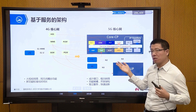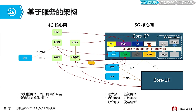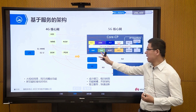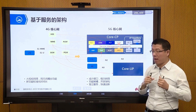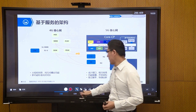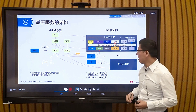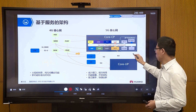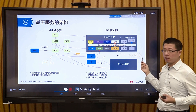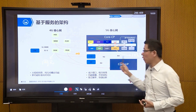Many functions that were integrated in 4G network elements are split in 5G. For example, the MME in 4G — which handled mobility management and control — is split into AMF (access and mobility management function) and SMF (session management function) in 5G. In the 4G era these were network elements, but in 5G they become functions that can be deployed as microservices or virtual machines, representing an upgrade from hardware to software.